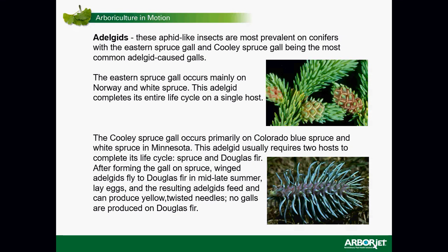There are insects called adelgids, which are closely related to aphids, that also produce galls — mostly stem galls on spruce. Some gall species only need one host species to complete their life cycle. In contrast, the Cooley spruce gall aphid needs two different hosts. They reproduce on the Colorado blue spruce, but when they emerge they need to go over to Douglas fir to complete their life cycle.